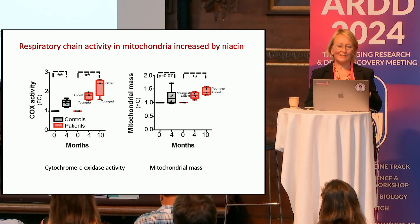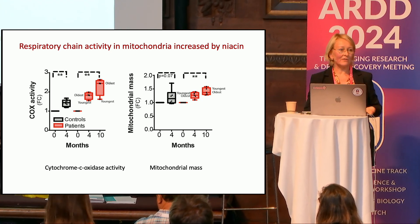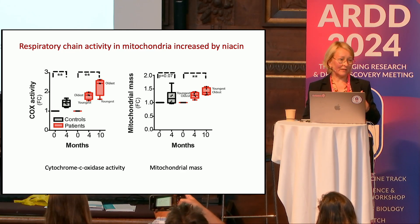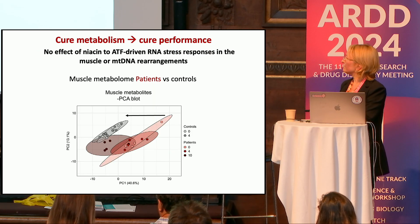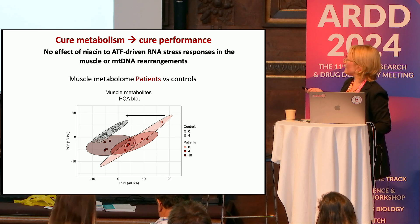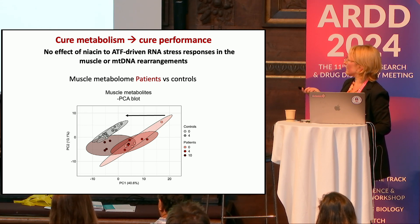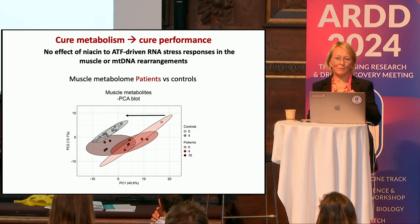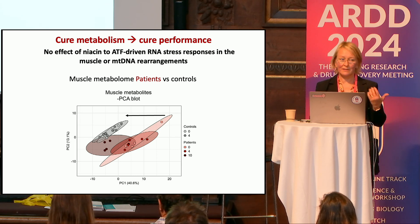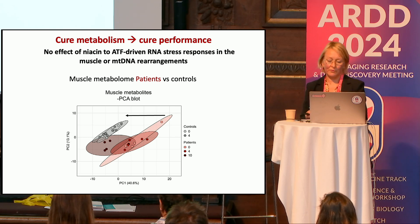Remember that muscle NAD didn't increase in the controls, yet we still see increased oxidative phosphorylation activity — meaning there was an increased flux through muscle NAD. When we looked at the metabolome in a PCA plot, before treatment the patients were quite far from the controls, but during four and 10 months of treatment they shifted towards the controls. We could cure the metabolome, but we didn't cure any RNA stress responses or the original defect. When we cured the metabolism, that was curing performance in these patients.